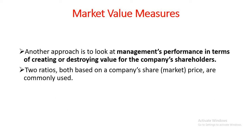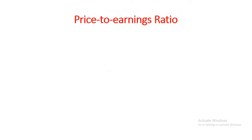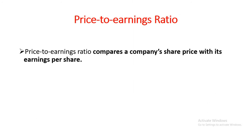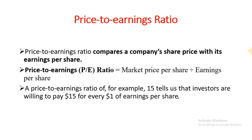There are two popular ratios to analyze the market value of the company, or simply to analyze a company's share price. These are the price-to-earnings ratio and the price-to-book ratio. Let's look at the price-to-earnings ratio. The price-to-earnings ratio compares a company's share price with its earnings per share. The formula for the price-to-earnings ratio is equal to market price per share divided by earnings per share, or simply EPS.